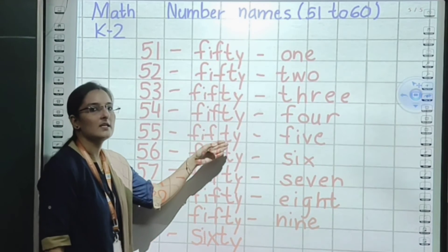Next: 53. F, I, F, T, Y — fifty, small sleeping line, T, H, R, E, E — three. 53 is fifty-three. Next: 54. F, I, F, T, Y — fifty, small sleeping line, F, O, U, R — four. 54 is fifty-four.